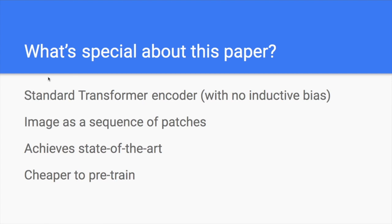What's special about this paper? They use a standard transformer encoder to perform image processing tasks. The important thing is they didn't put any inductive bias into the model structure. If you think about CNN — convolutional neural networks — it has a lot of assumptions about images, like locality. But a transformer doesn't have any assumption about images.